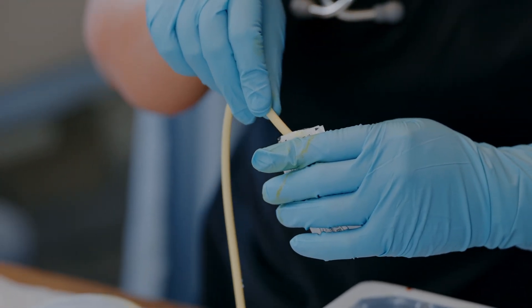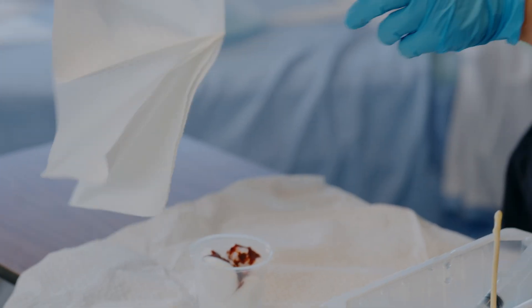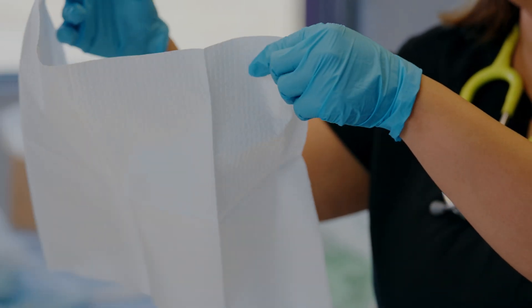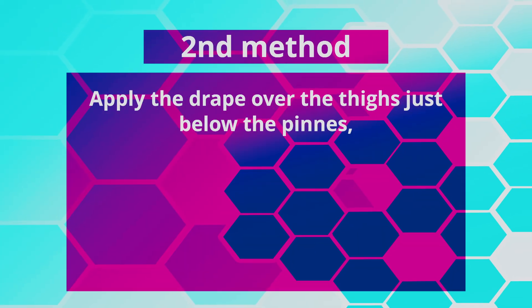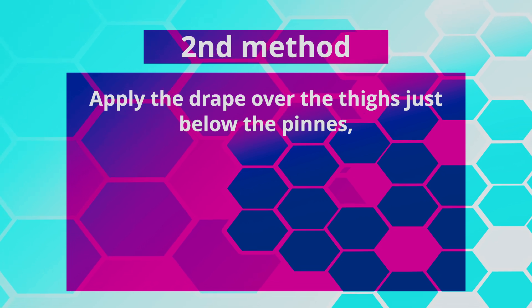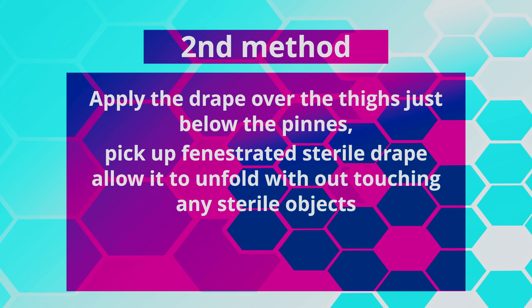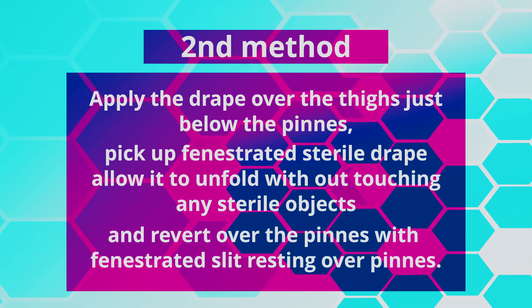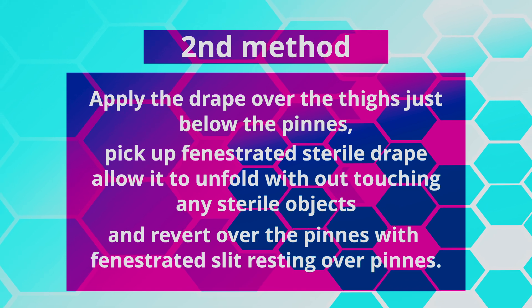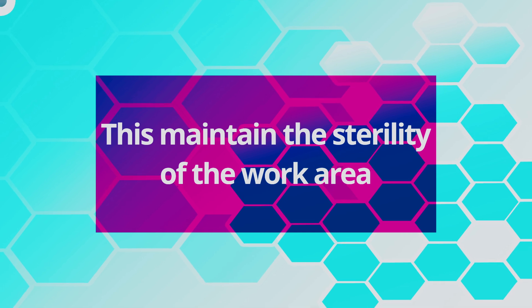For males, there are two methods for draping. First, apply the drape over the thighs and under the penis without completely opening the fenestrated drape. Second method: apply the drape over the thighs just below the penis, pick up the fenestrated sterile drape, allow it to unfold without touching any sterile objects, and drape it over the penis with the fenestrated slit resting over the penis. This maintains the sterility of the work area.